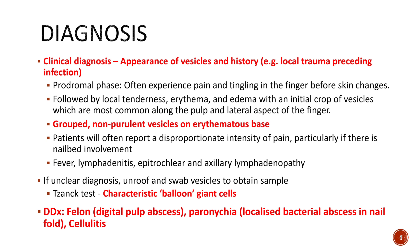There are a few phases to this infection. Commonly, there is a prodromal phase where patients experience pain and tingling of the fingers before any vesicles appear. After that, patients can develop localized pain, redness, and swelling along the pulp and lateral aspect of the finger. Less commonly, patients can also develop fever and lymphadenopathy.